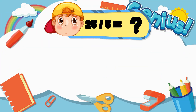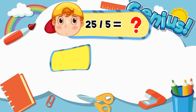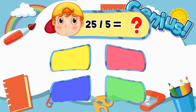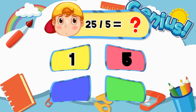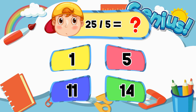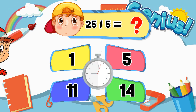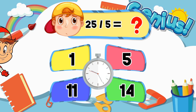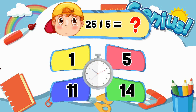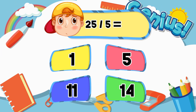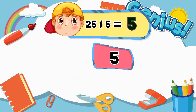What is twenty-five divided by five? Options: One, Five, Eleven, Fourteen. Answer: Five.